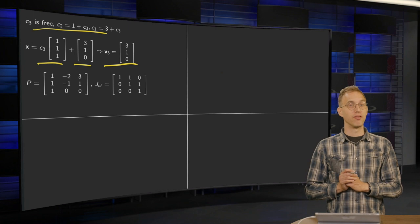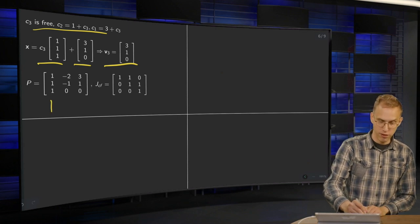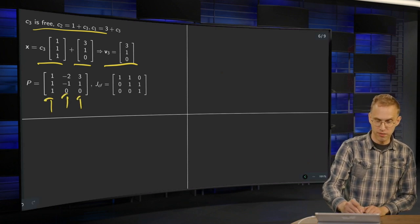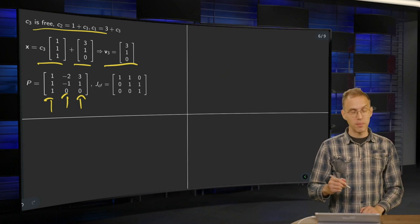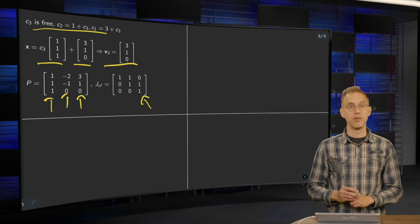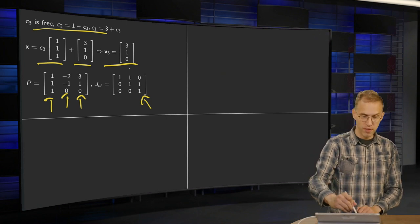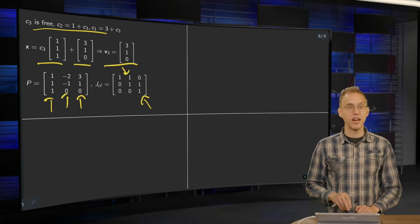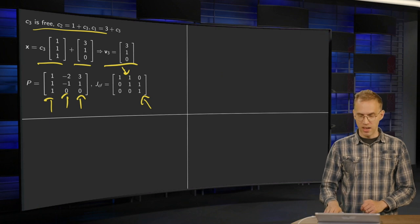And then we can form a P consisting of V1, V2, and V3. We can write down immediately what the JCF is. The eigenvalues on the diagonal. There's only one block and one above it. So there you have your JCF.